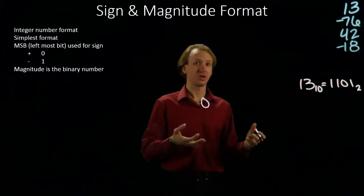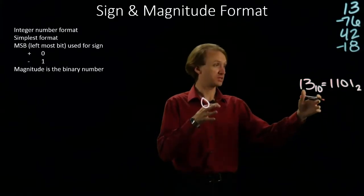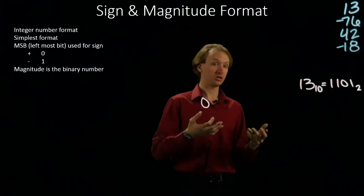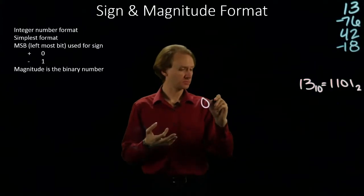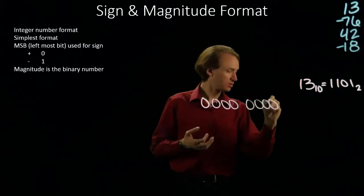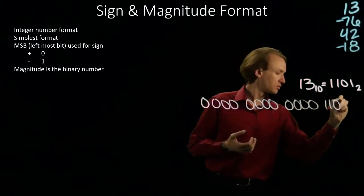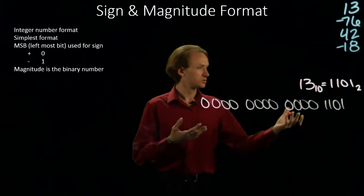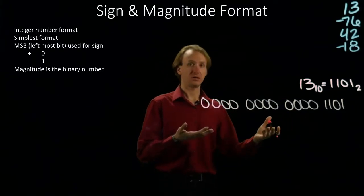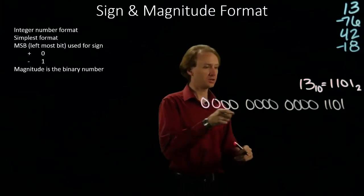Adding zeros to the left-hand side of a number won't change its magnitude. Accordingly, adding zeros to the left-hand side of my magnitude will also not change its value. So there is 13 in sign and magnitude format. I've got a sign bit, and then I've got my magnitude.